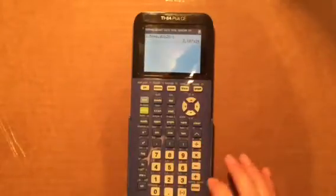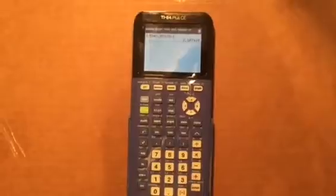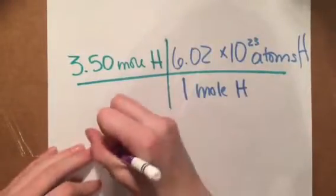And then you'll get 2.107 times 10 to the 24th. So as the calculator showed you, you end up with 2.107 times 10 to the 24th.